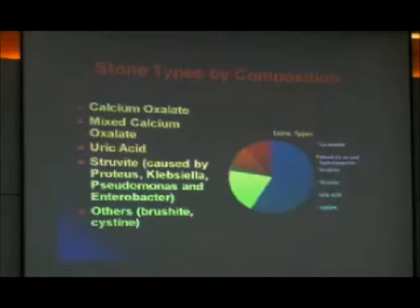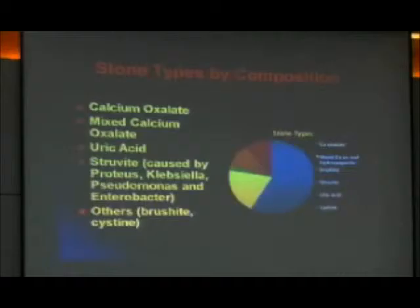Now, there are lots of types of stones, but the bulk of stones — almost 75% — are calcium stones, mixed stones, and uric acid stones. My discussion this morning will center mostly on calcium, oxalate, and uric acid stones, which are primarily the number one root causes of stones.